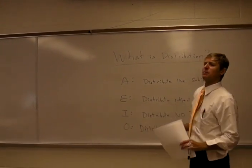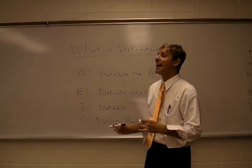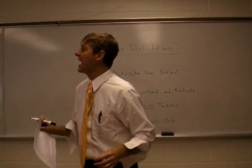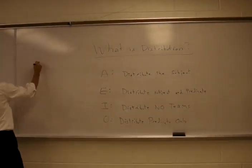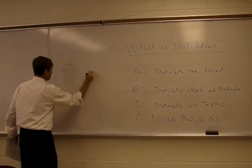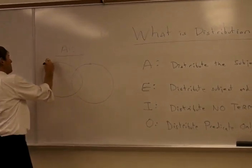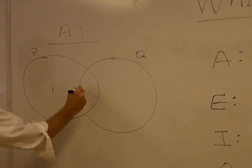Now, why do A statements distribute subject but not predicate? It might be useful for me to get out our handy-dandy diagram. Here's an A statement. This circle represents the class of all things P. This circle represents the class of all things Q.